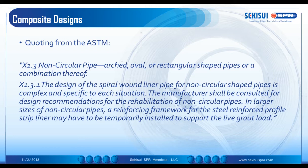Composite designs — designing composite product liners where you have a high-strength structural mortar — is not quite so simple to boil down to a few pages within a design standard. Within the ASTM, it states that for non-circular pipe — arched, oval, or rectangular shaped pipes, or a combination thereof — the design of the spiral wound liner pipe is complex and specific to each situation. The manufacturer shall be consulted for design recommendations. In larger sizes of non-circular pipes, a reinforcing framework for the steel reinforced profile strip liner may have to be temporarily installed to support the live grout load. In essence, the design approach here quite often requires finite element analysis.